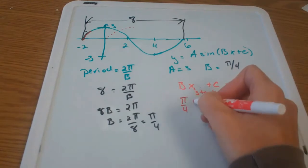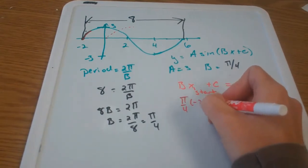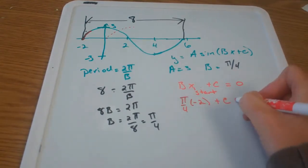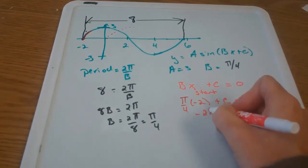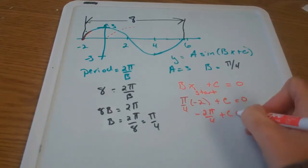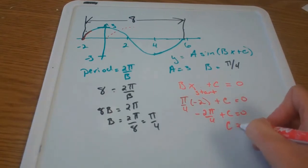b, recall, is π over 4. So π over 4 times x-start, which is negative 2, plus c equals 0. That's negative 2π over 4 plus c equals 0. Solving for c, c is positive π over 2.